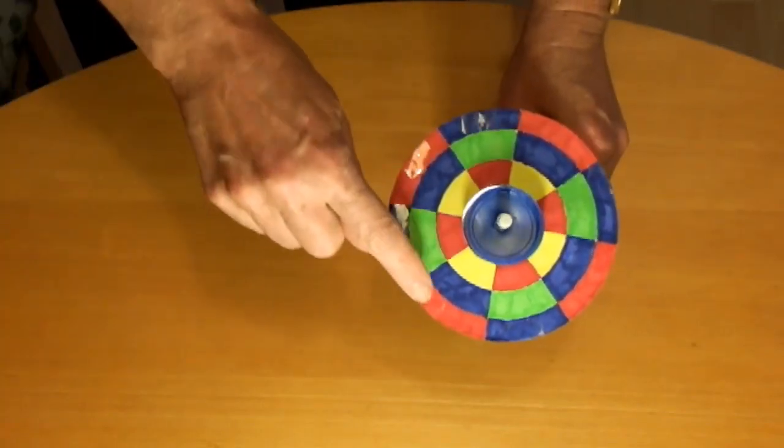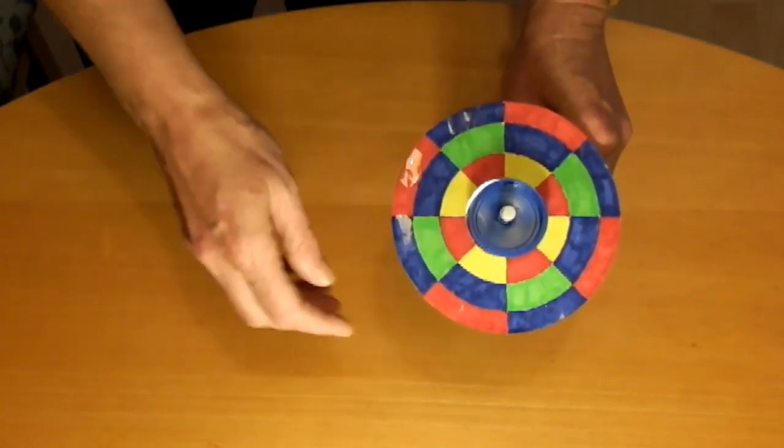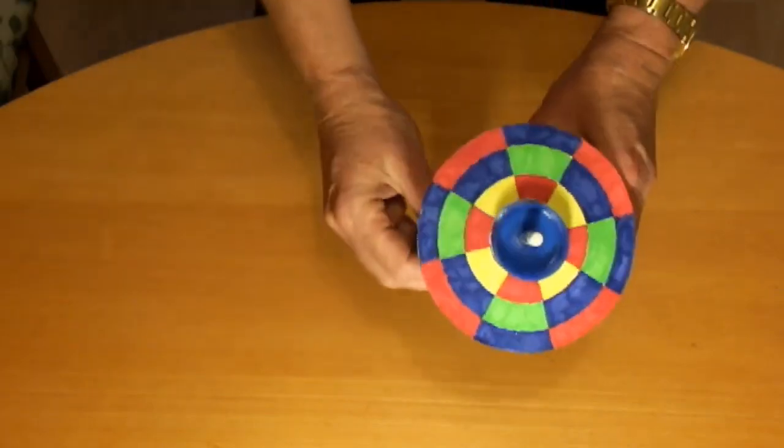Here I'm mixing red and blue on the outer ring, green and blue on the middle ring and red and yellow on the inner ring. Look what happens when I spin the disc.